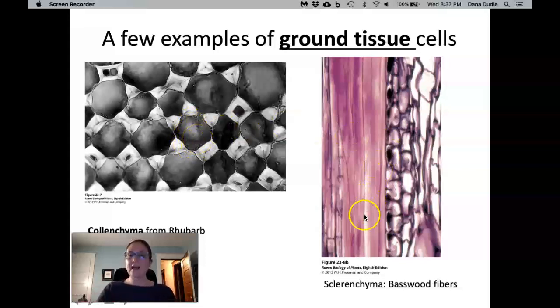Sclerenchyma, on the other hand, tends to be a tissue that's associated with mature tissues, not tissues that are still growing. Sclerenchyma tissue is characterized by having secondary cell walls. So these cells are dead at maturity and have thick, solid cell walls that help support the tissues. So in this case, these are fibers, which are actually present in wood, or sometimes they're present in plants that are used to make fibers, like linen has some good sclerenchyma fibers in it. Sclerenchyma is also found in some fruits, like in peach pits actually,